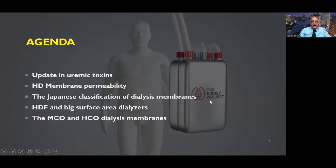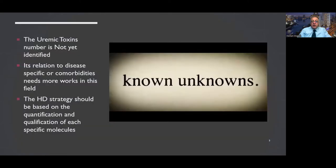The agenda will cover uremic toxins in brief, hemodialysis membrane permeabilities, the Japanese classification of dialysis membranes, hemodiafiltration and big surface area dialysers, and finally the medium cut-off and high cut-off dialysis membranes. We know that there are a lot of unknowns, including uremic toxins, and the full list is not yet identified.